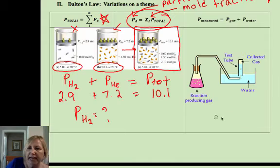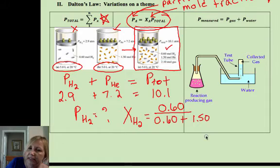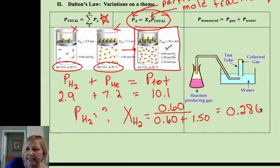So if I want to know the pressure of hydrogen, my first step is to get the mole fraction of hydrogen. Well, if we look at our picture, we see we have 0.60 moles of hydrogen. So our part is 0.60. Our whole is the sum of the two. I have 0.60 moles of hydrogen plus 1.50 moles of helium. So it's just the part over the whole, and if you do that algebra, I get 0.286. This is unitless because it's moles over moles.